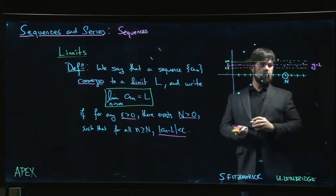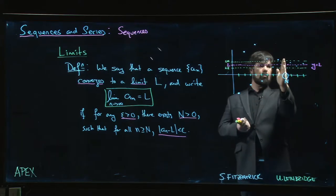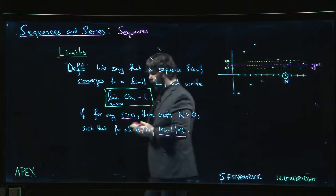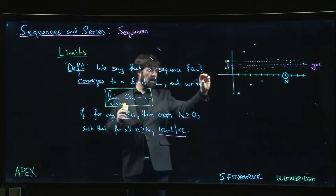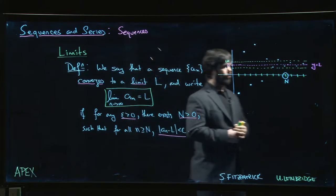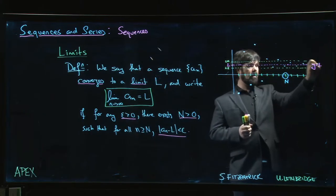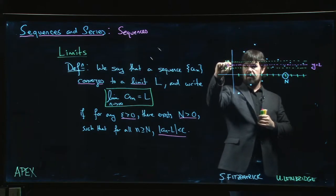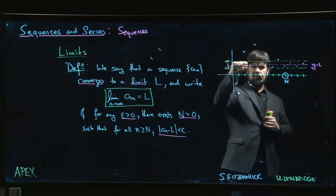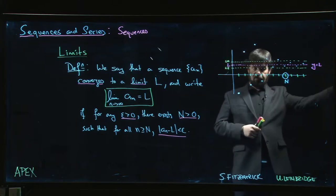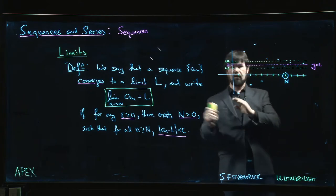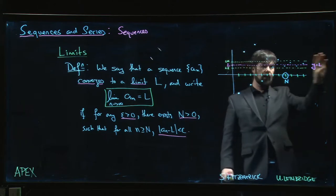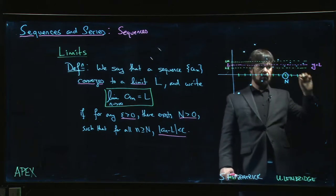All right, so there's some value of N right here, so that once we hit there, all the later terms in the sequence are going to be within that strip. And of course this is saying that the terms in the sequence do have to get closer and closer to L, because if I shrink the strip, if I make epsilon smaller, if I make this narrower, well then I might have to go further out before I find an N that works.